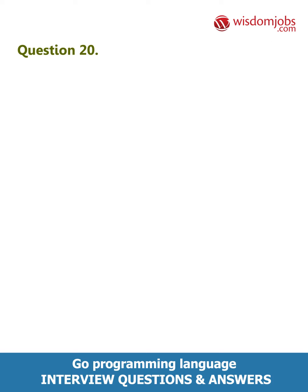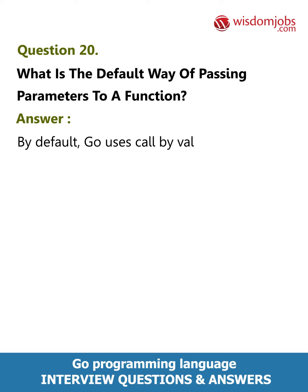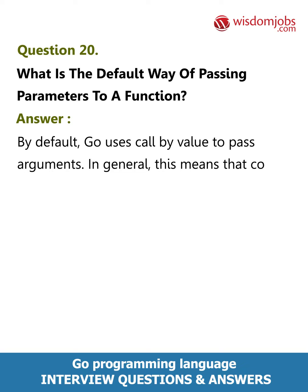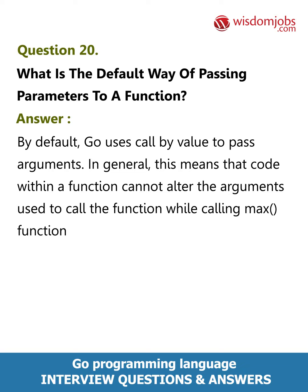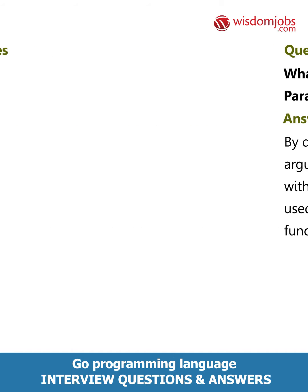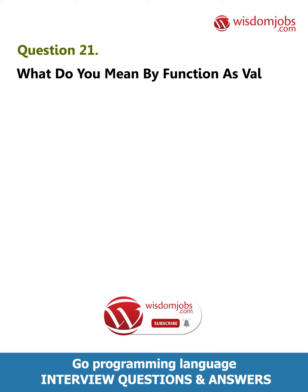Question 20: What is the default way of passing parameters to a function? Answer: By default, Go uses call by value to pass arguments. In general, this means that code within a function cannot alter the arguments used to call the function. While calling the max function, Go used the same method.